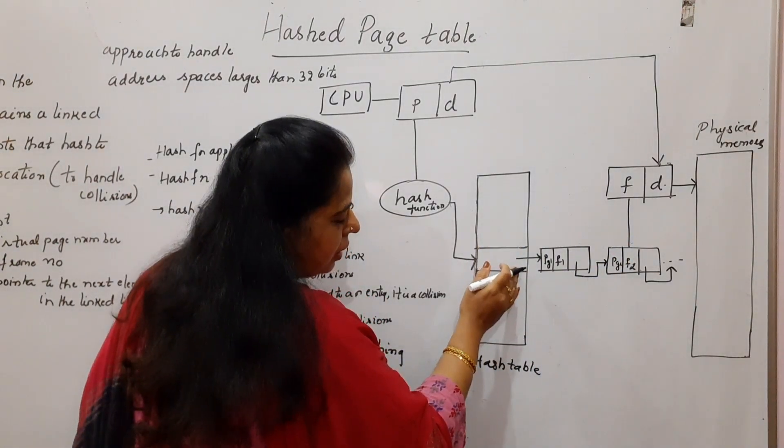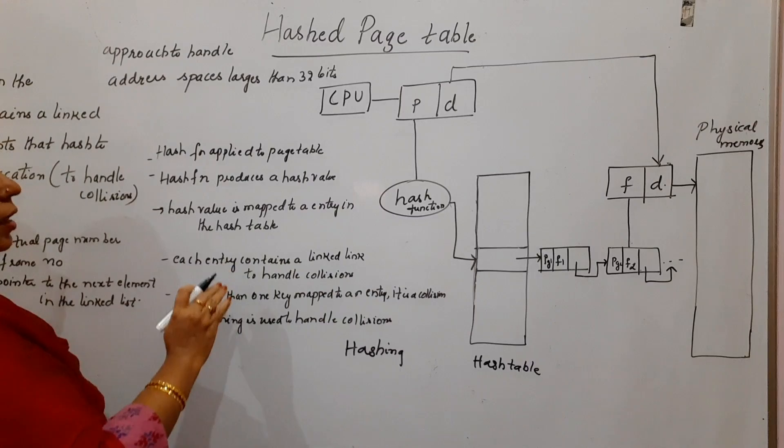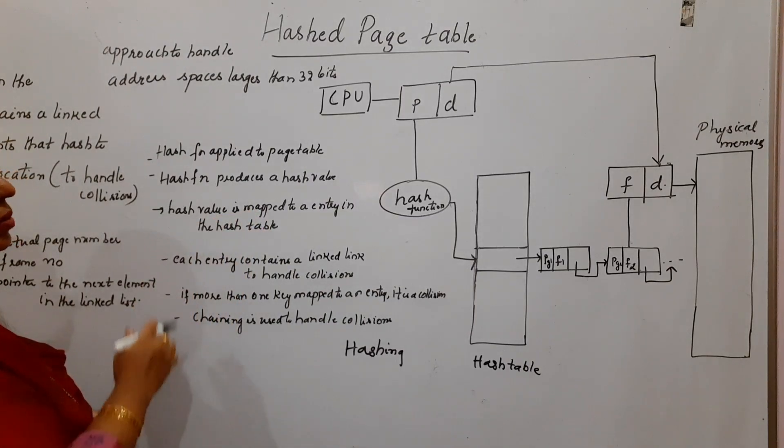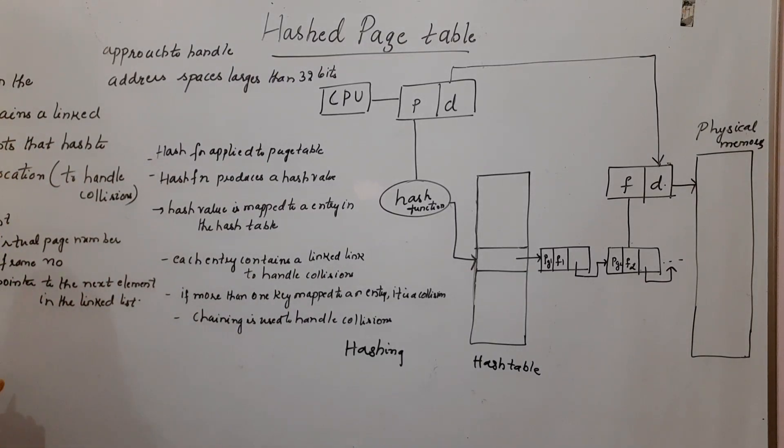So that means it is having a linked list type of information. Now let me tell you why this particular linked list information is required here in case of hashed page table technique. In hash, we are using a technique called hashing. Now why is hashing required?